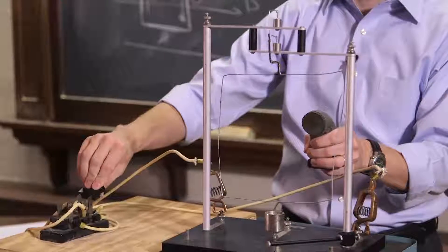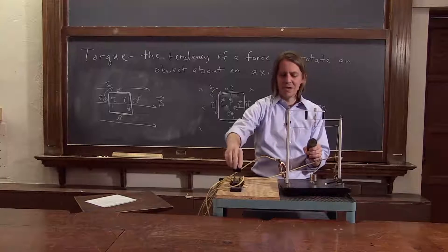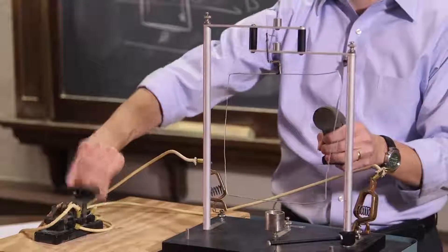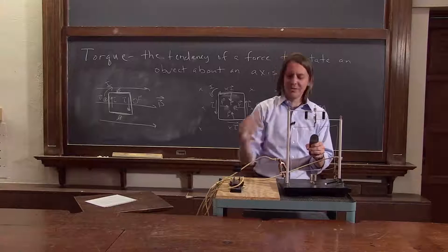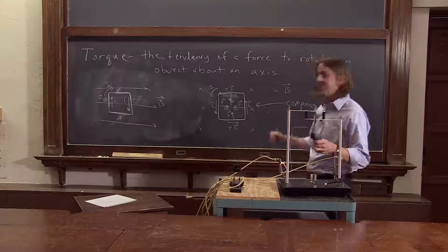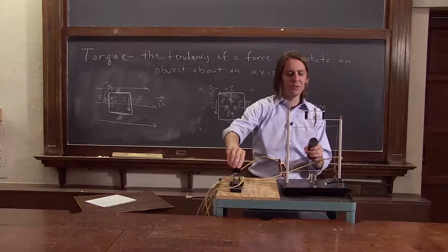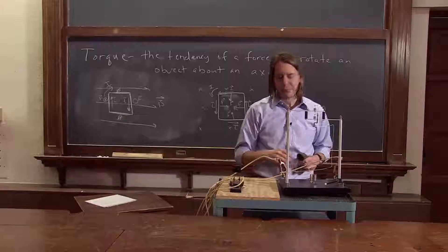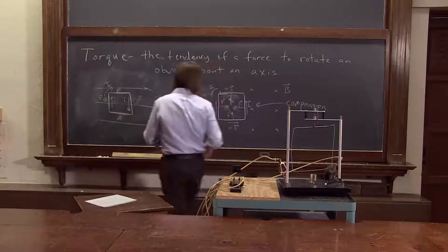Sure enough, it doesn't move — well, slightly; my fields aren't perfect. But it's not moving nearly as much as before. You can see it almost wants to contract. Now I'll throw the switch the other way — if you go through the numbers, it should want to expand. It's not compressible, so it won't expand. But we can see that it doesn't really move. Very little motion. So everything about the current loop makes sense.